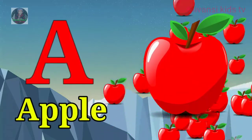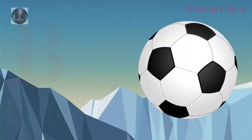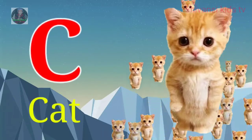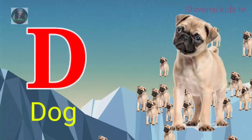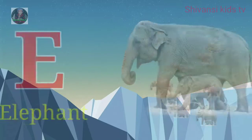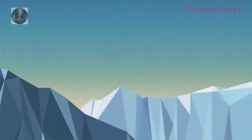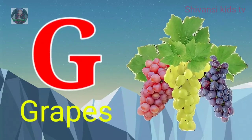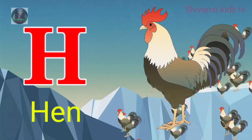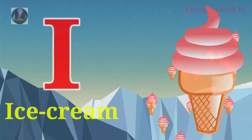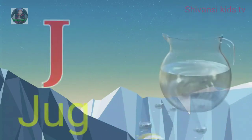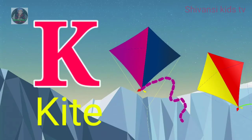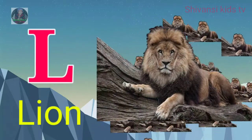A for apple, B for ball, C for cat, D for dog, E for elephant, F for fish, G for grapes, H for hand, I for ice cream, J for jug, K for kite, L for lion.